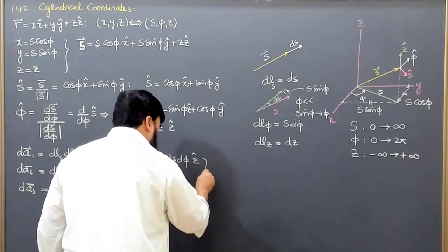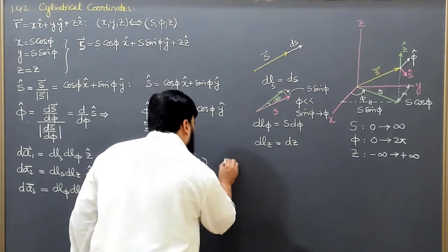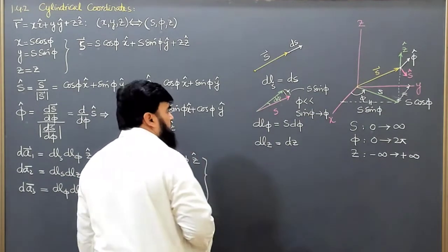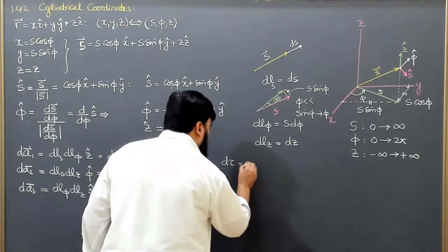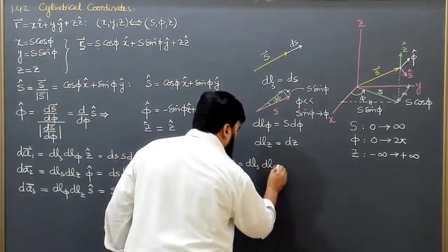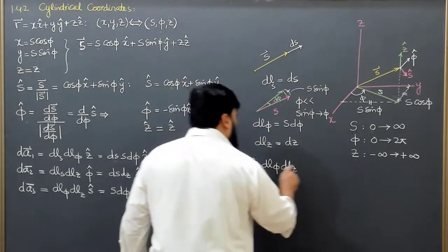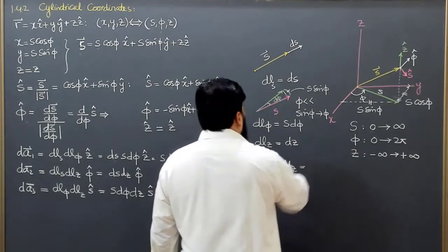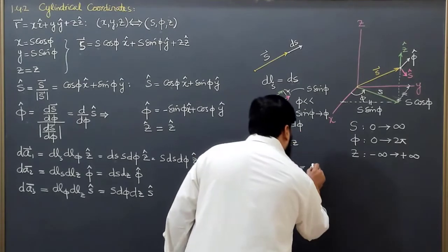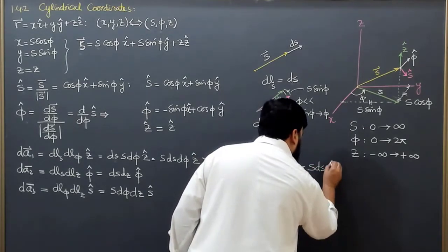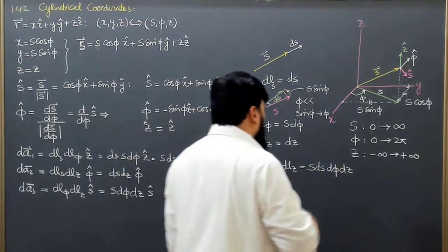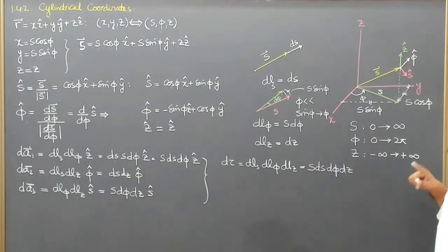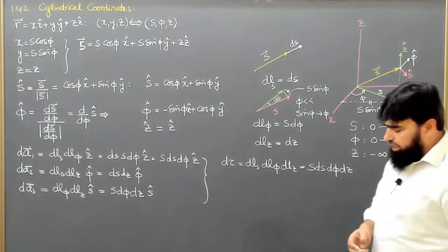Similarly, we can calculate the volume element. Just as in 3D Cartesian coordinates we have dx dy dz, here we will have dτ equal to DLs DLφ DLz. So dτ is equal to s ds dφ dz, with each variable running over its defined limits. We can find the area or volume of a cylinder with the help of these elements.